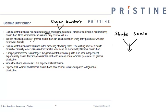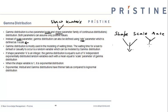Just like exponential distribution, instead of the scale parameter, we can also parameterize the gamma distribution using a rate parameter, which is nothing but the inverse of the scale parameter. Therefore, you will see that different software allow the user to parameterize the gamma distribution using either scale or rate, or any of the two parameters.